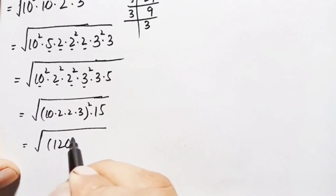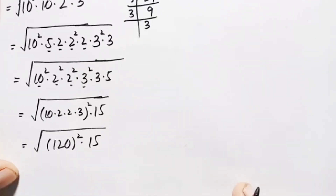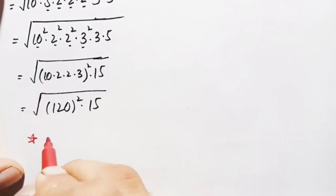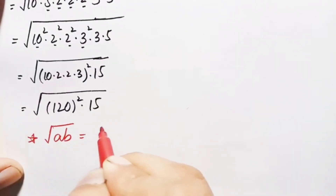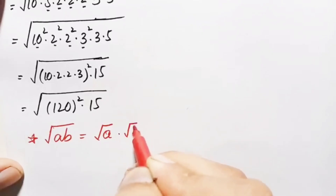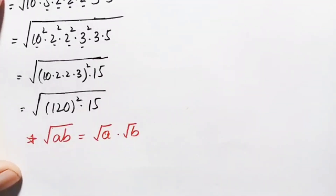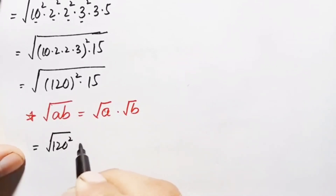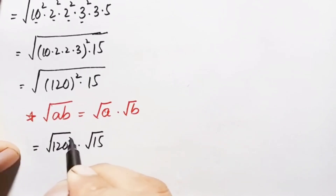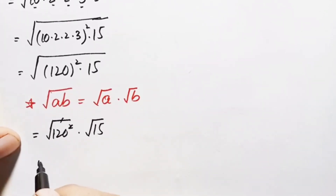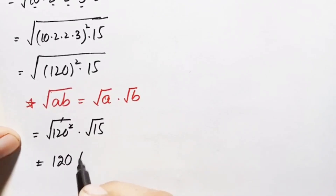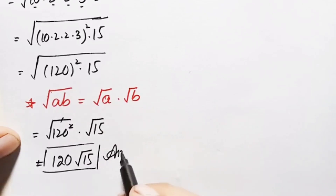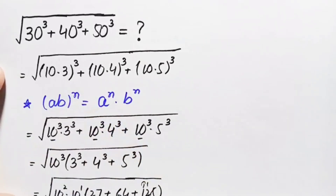Using the radical math property — that the square root of a product equals the product of the square roots — we separate the perfect square part. The square and square root cancel, leaving 120. So the final answer using the first method is 120 times √15.